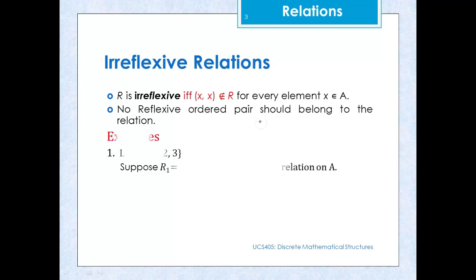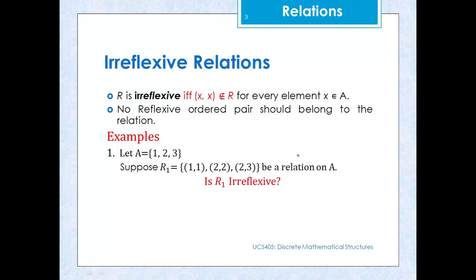For example, if we have a set A containing elements 1, 2, and 3, and a relation R1 containing ordered pairs (1,1), (2,2), and (2,3) defined on set A — is R1 irreflexive? The answer is no, because we have ordered pairs of type (x,x) such as (1,1) and (2,2), and those types of ordered pairs are not allowed in an irreflexive relation.